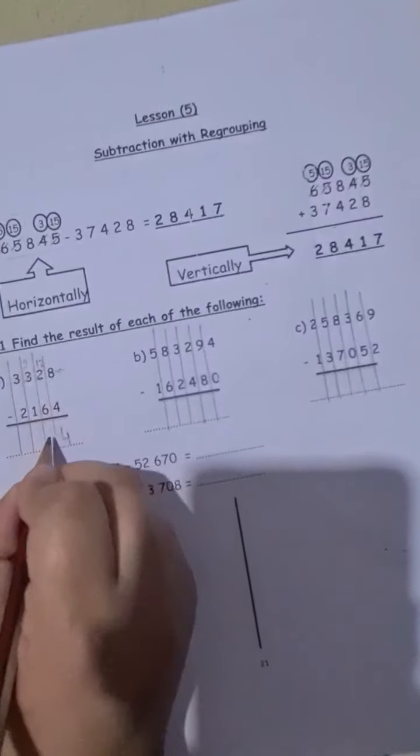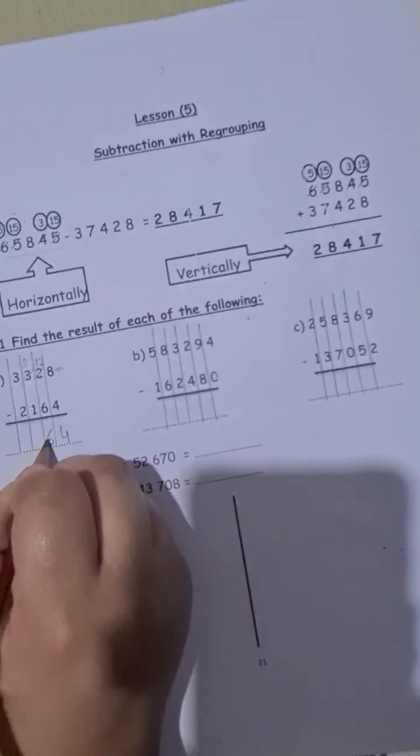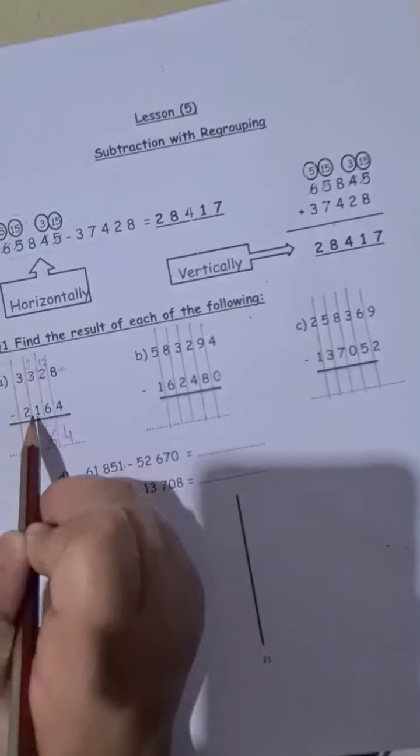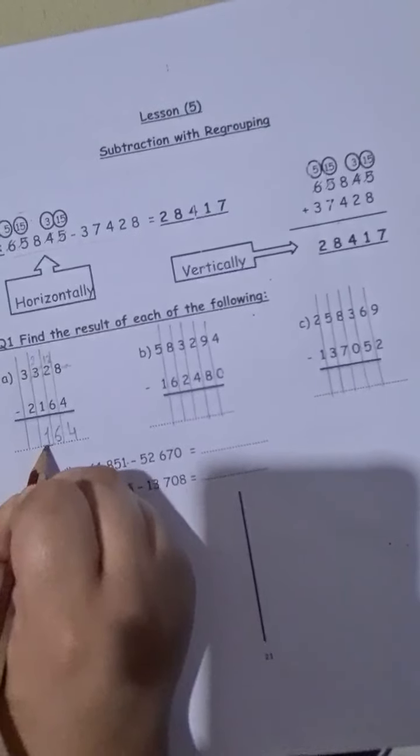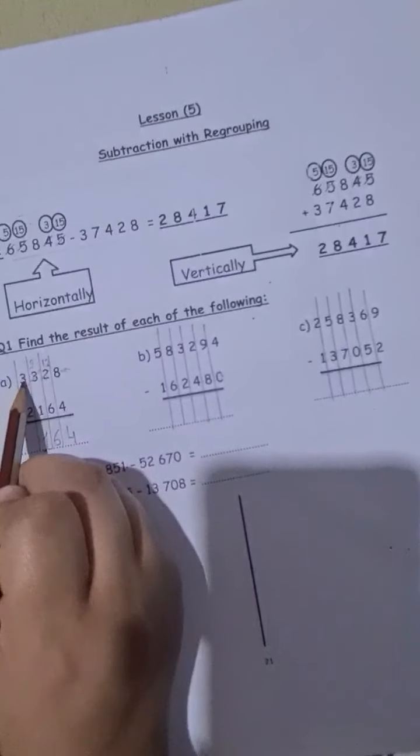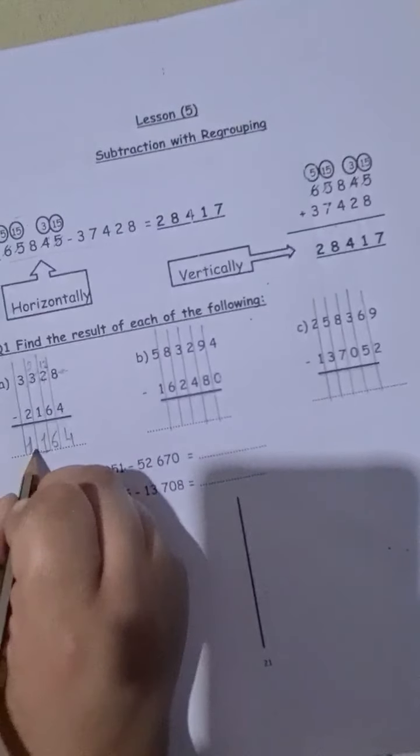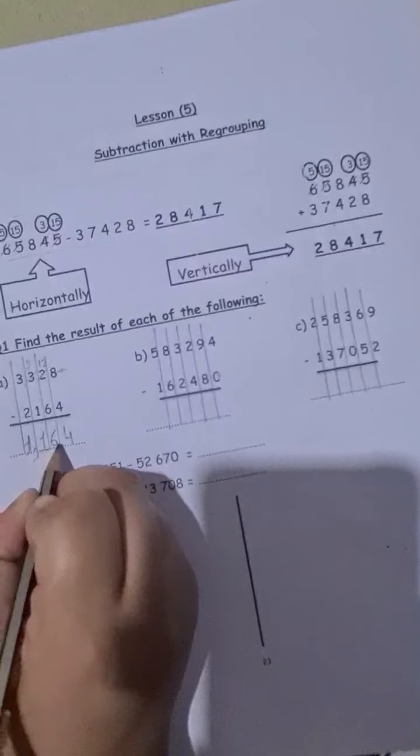Now, 12 minus 6 is 6. Then I will go to the next place, which is the hundreds. 2 minus 1 is 1. Then I will go to the thousands. 3 minus 2 is 1. So at the end, the answer is 1,164.